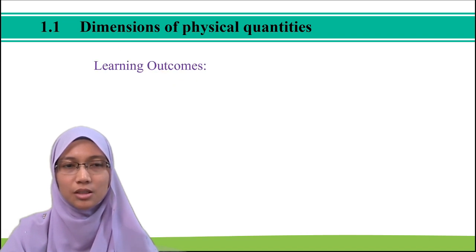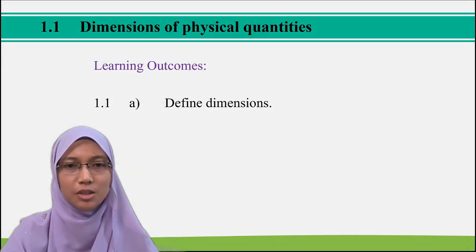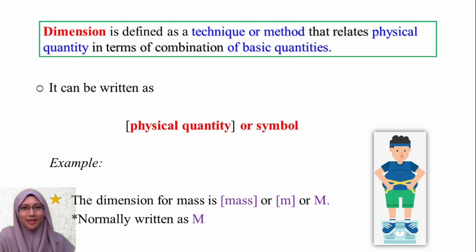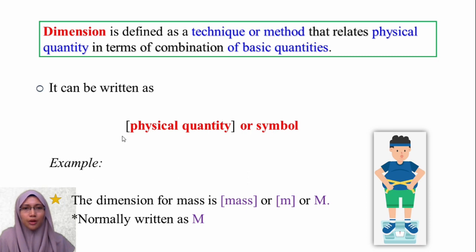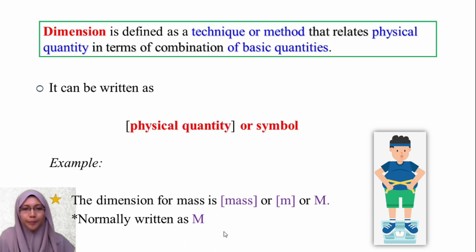For the first subtopic of this lecture, you have Dimensions and Physical Quantities, and the learning outcome is to define dimensions. Dimensions is defined as a technique or method that relates a physical quantity in terms of a combination of basic quantities. The way we write the dimension is by having a bracket with the physical quantity inside the bracket, or we can write a symbol. The dimension of mass is written as bracket M, bracket small m, or the symbol capital M — and it is normally written as capital M.